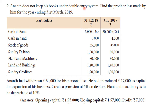As on 31st March 2018: cash and bank 5,000; cash in hand 3,000; stock of goods 35,000; sundry debtors 1,00,000; plant and machinery 80,000; land and buildings 1,40,000; sundry creditors 1,70,000.